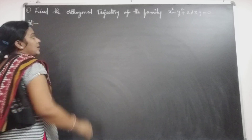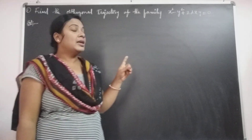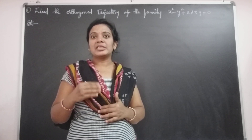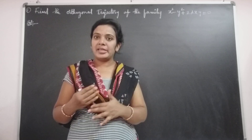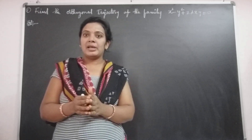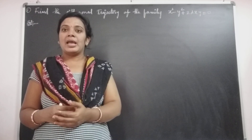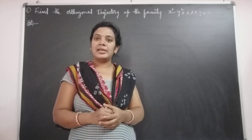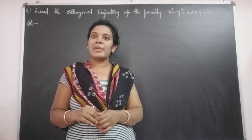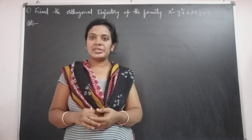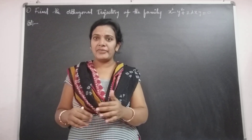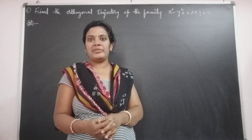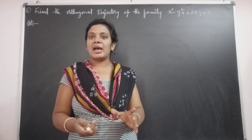In this equation, λ is a parameter and x, y are the variables. First, we differentiate with respect to x and eliminate λ from the derivative. After elimination of λ, we get the differential equation of the given family. Then we replace dy/dx with -dx/dy, or y' = -1/y'. Solving that equation gives us the family of orthogonal trajectories.